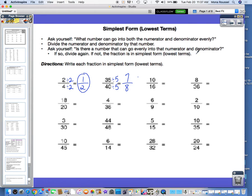Then we ask ourselves, is there another number that can go into both 7 and 8 evenly? No, the only thing that can go into 7 besides 1 is 7, and 7 can't go into 8 evenly. So 7/8 is in simplest form.